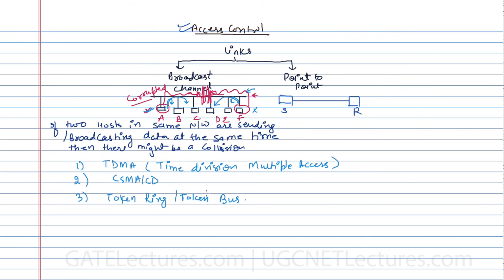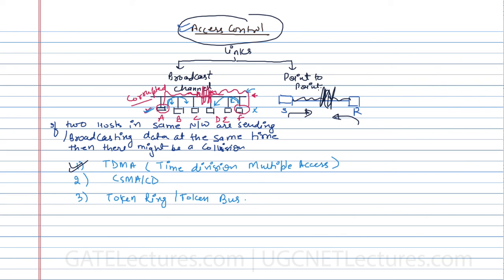We'll be starting with TDMA — Time Division Multiple Access. Before moving on, let me revise: access control means if a sender and receiver want to send data at the same time simultaneously, there may be a collision in the network, causing data to get corrupted. So we should not give access to more than one host to send data in parallel. Now let's discuss TDMA — what is Time Division Multiple Access?